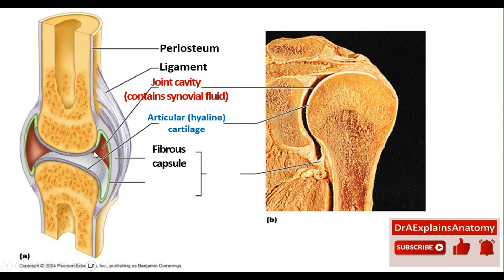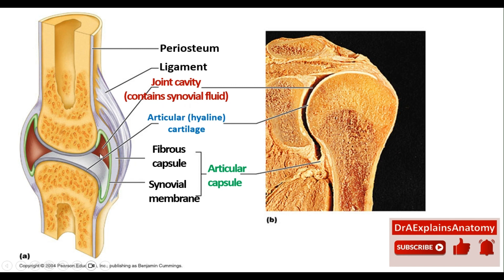This right here is the fibrous capsule, whereas this is the synovial membrane. They both form the articular capsule. Don't confuse the ligament, which supports the joint, with the articular capsule, which consists of the fibrous capsule — the outer part — and the synovial membrane, which helps secrete the synovial fluid found in the joint cavity.